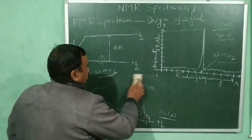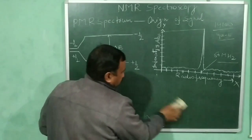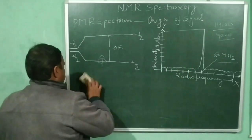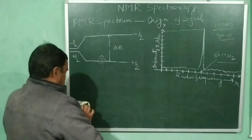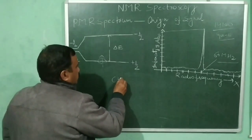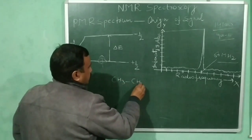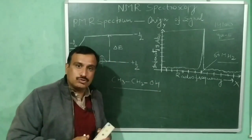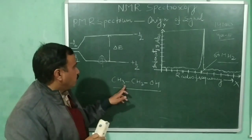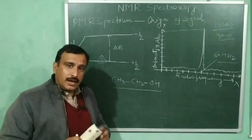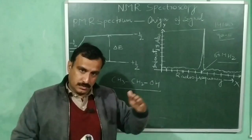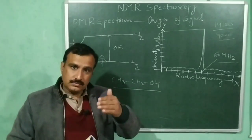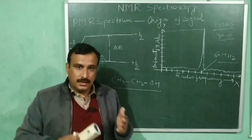Now let us explain the NMR spectrum with an example — ethanol. In ethanol we have six protons or six hydrogen nuclei: three plus two plus one. We might expect that all six hydrogen nuclei or protons will absorb at the same magnetic field.